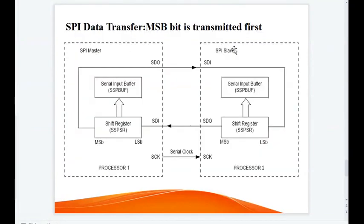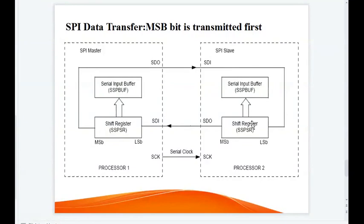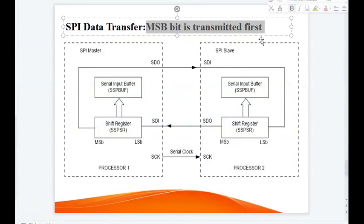The SPI master and SPI slave devices each consist of a shift register, as shown in the figure. By using the combination of a shift register and buffer register, the master and slave devices communicate with each other. In serial communication, the MSB bit is transmitted first.